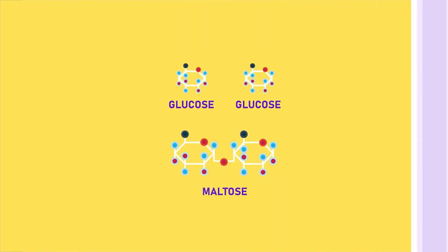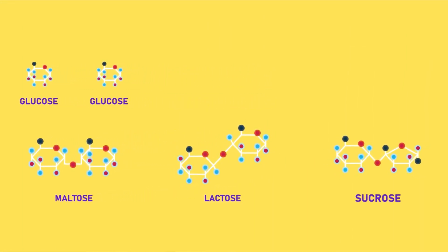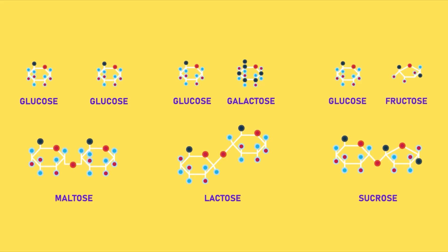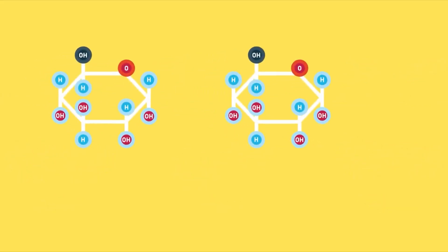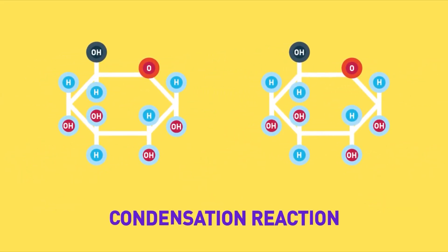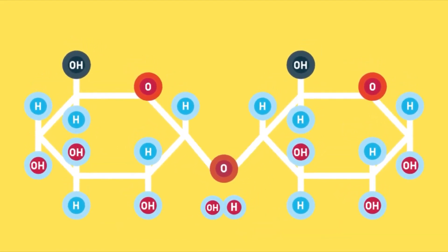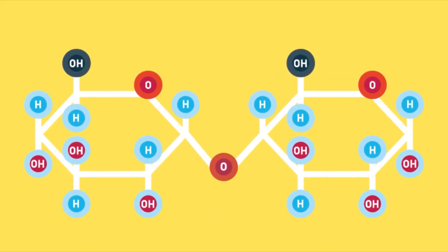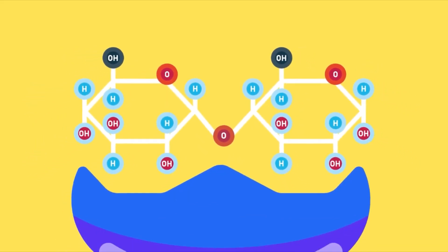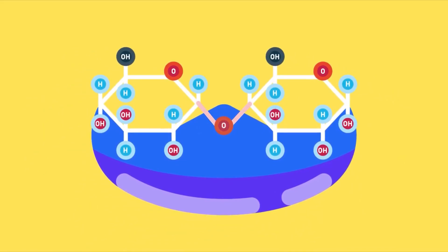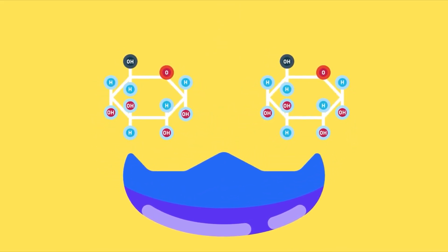The formation of one molecule of disaccharide requires two molecules of simple sugars. Each reaction is known as a condensation reaction, whereby two simple molecules are joined together to form a larger molecule with the removal of one molecule of water. When a disaccharide is treated with a suitable enzyme, it breaks down to form monosaccharides. In this reaction water is added, and thus the reaction is called hydrolysis or hydrolytic reaction.